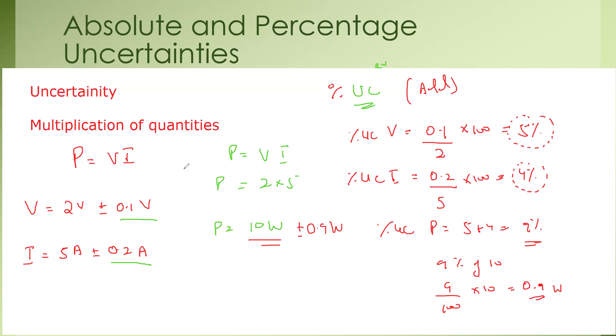When the quantities are multiplied, we work out the uncertainty by using the percentages instead of adding the uncertainties directly.